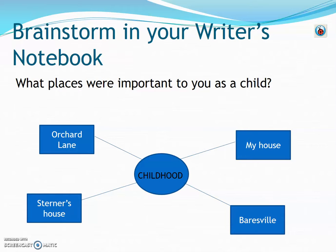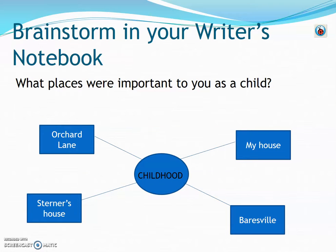The next thing you would do is choose one of these locations that stands out to you — I'm going to do Orchard Lane for mine — and then brainstorm as many memories as you can for that location, with little tentacles coming off around the outside. They could be happy memories, sad memories, painful memories — any memories that come to mind. You can brainstorm around the outside of the box or make a new web in your writer's notebook. Please pause the video, do your brainstorm, and when you have the memories for your chosen location, hit play again.